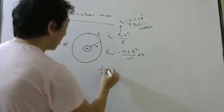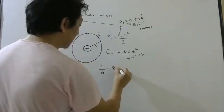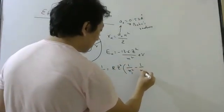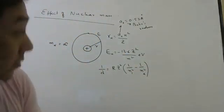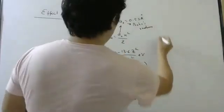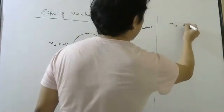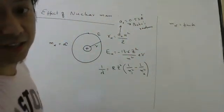Radius is given by the formula N0, N squared by Z. The value of this N0 will come around 0.53 angstrom. It is also called Bohr's radius. Then energy we got minus 13.6 Z squared by N squared. And 1 by lambda we got some formula. R Z Z square 1 by N1 square minus 1 by N2 square. Now, when you consider the nuclear mass to be finite,